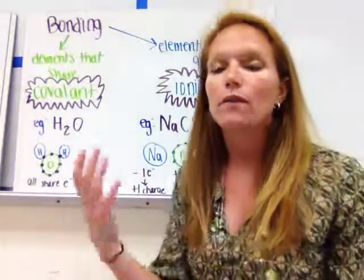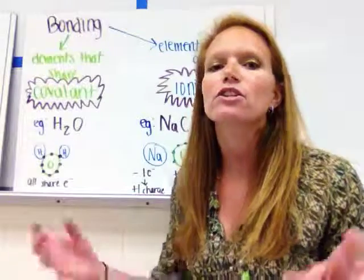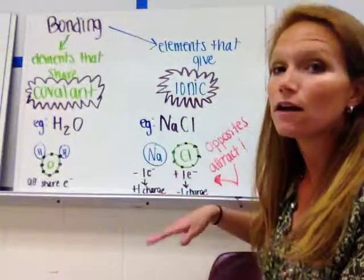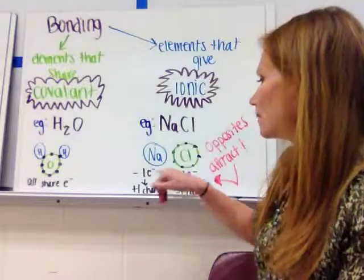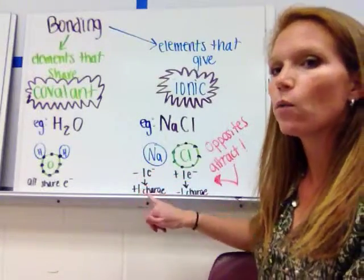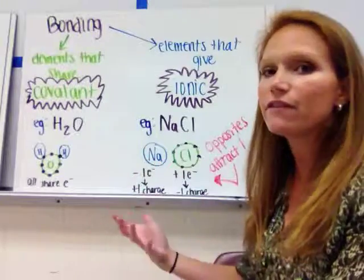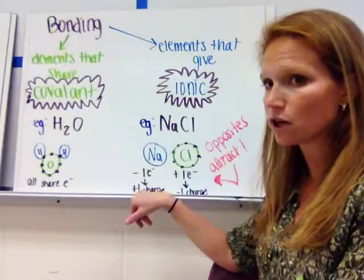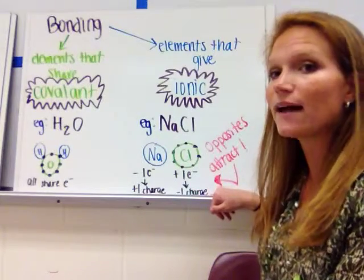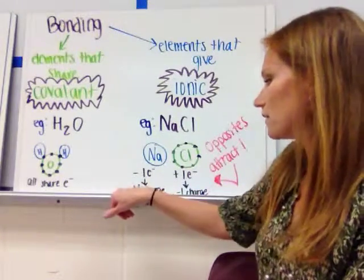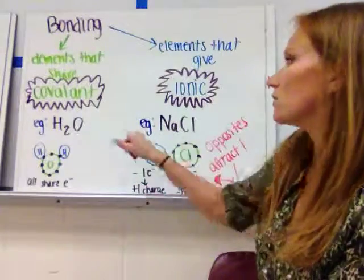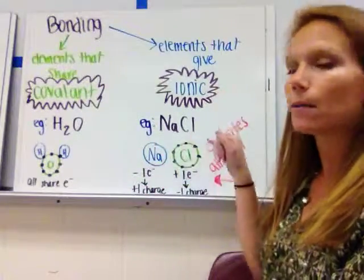Once they have those charges, opposites attract — a positively charged and a negatively charged element will stick together. For example, NaCl (sodium chloride, table salt): sodium gives up one electron, losing a negative charge and becoming positive, and gives it to chlorine, which gains a negative charge. A charge of +1 and −1 attract and form that ionic bond.